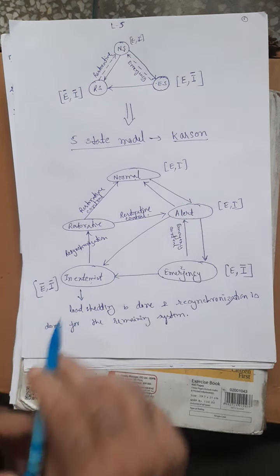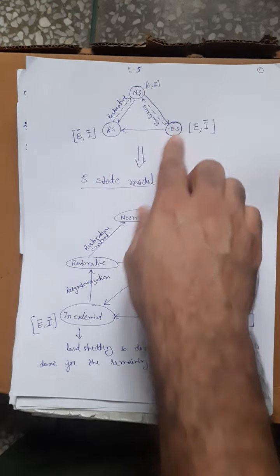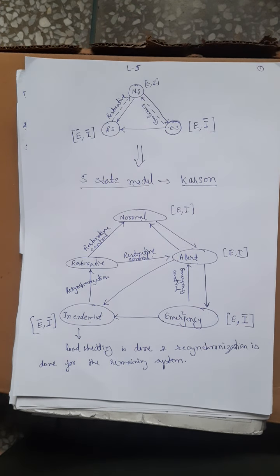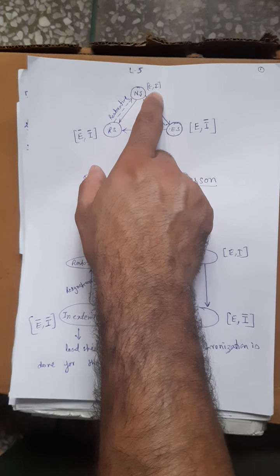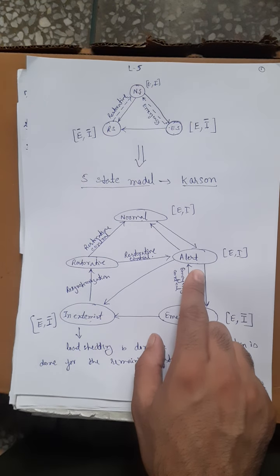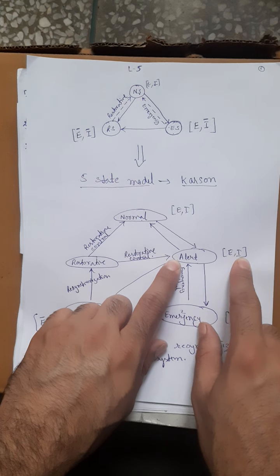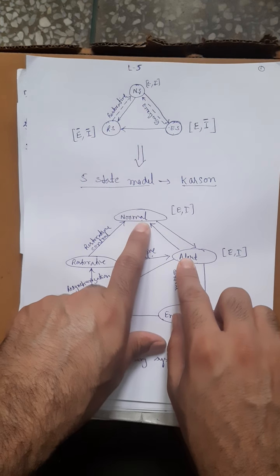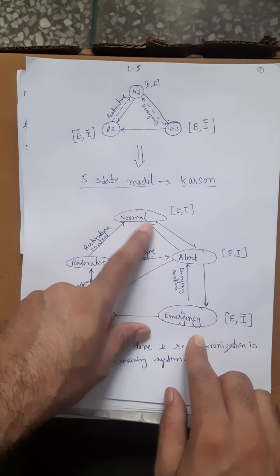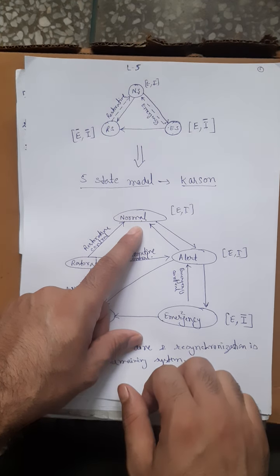The key difference between the three-state and five-state models is that in the three-state model, there is no warning to the operator before the system enters the emergency state. In the five-state model, the alert state gives the operator a warning that inequality constraints are about to violate, allowing corrective action to be taken.